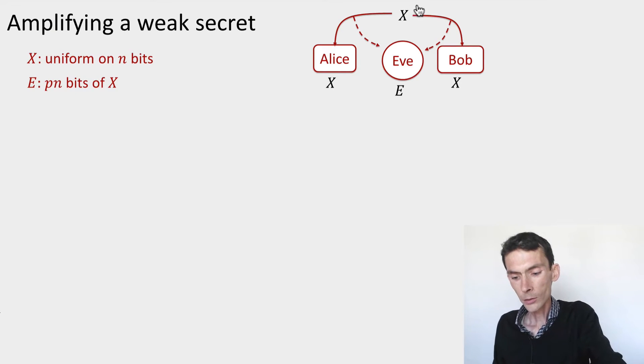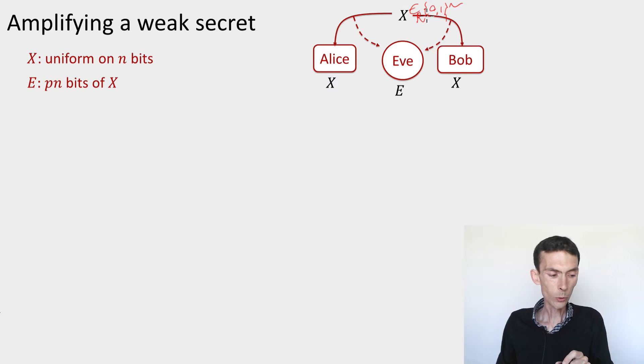We have a string x, which is an n-bit string, takes values in {0,1}^n. For the purposes of this example, I'll assume that x is uniformly distributed, which I'll write using a little r here. Completely uniform, but the eavesdropper has some side information about the string x.